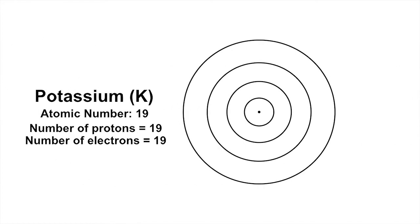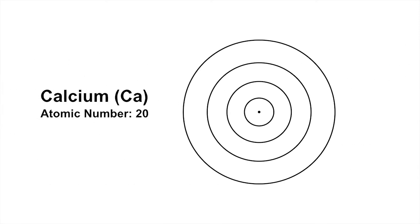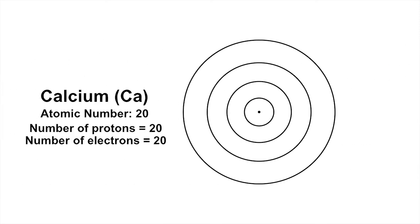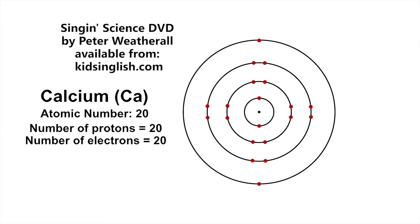Potassium has 19 electrons, 2 in the first shell, 8 in the second shell, 8 in the third shell, and 1 in the fourth shell. Finally, calcium has 20 electrons, 2 in the first shell, 8 in the second shell, 8 in the third shell, and 2 in the fourth shell.